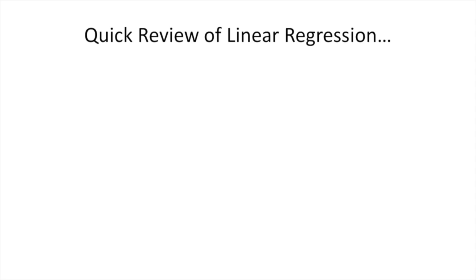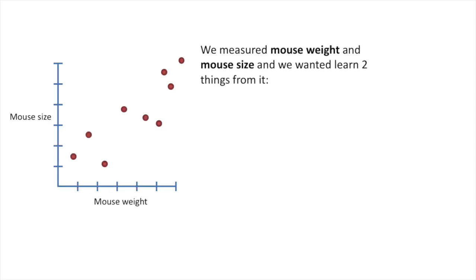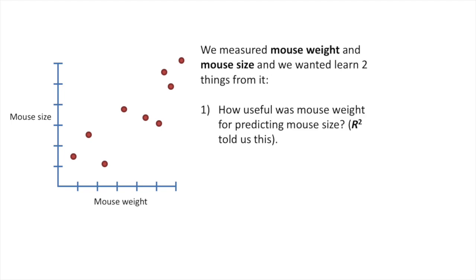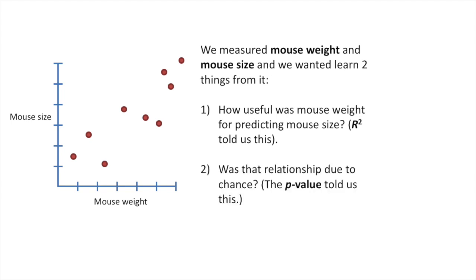Let's start with a super quick review of linear regression. Last time we measured mouse weight and mouse size, and we wanted to learn two things from it. We wanted to learn how useful mouse weight was for predicting mouse size — R-squared told us this. And we wanted to know if the relationship was due to chance — the p-value told us this.